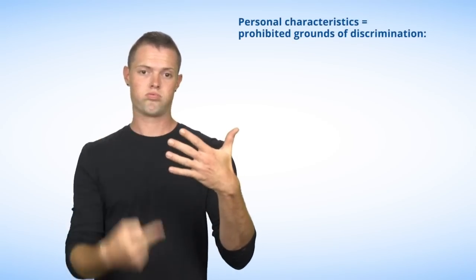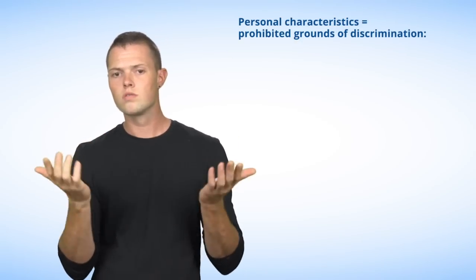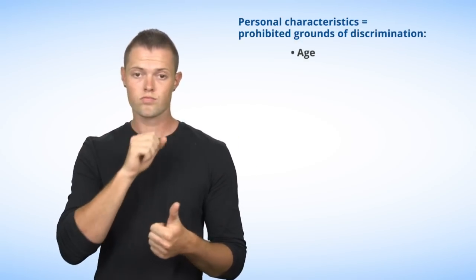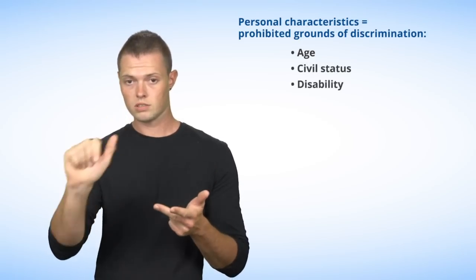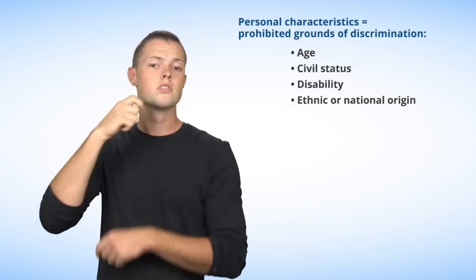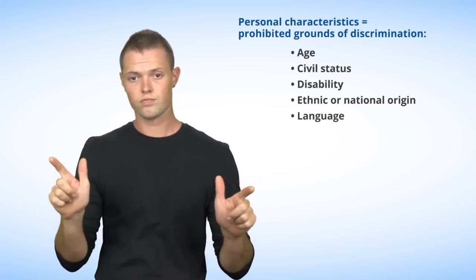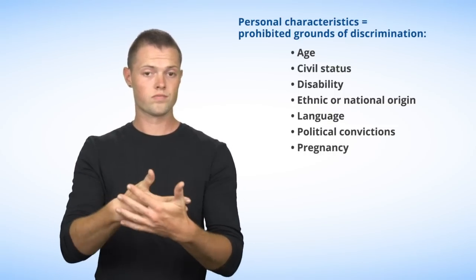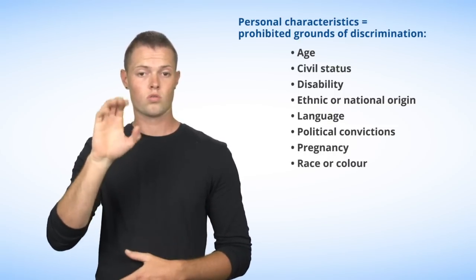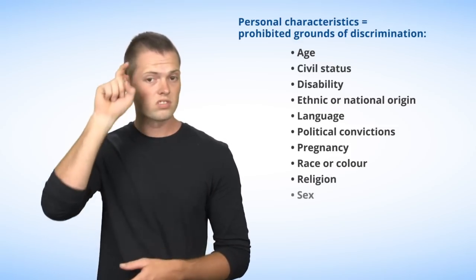The following personal characteristics are forbidden grounds of discrimination pursuant to the Charter: Age, Civil status, Disability, Ethnic or national origin, Language, Political convictions, Pregnancy, Race or color, Religion, and Sex.